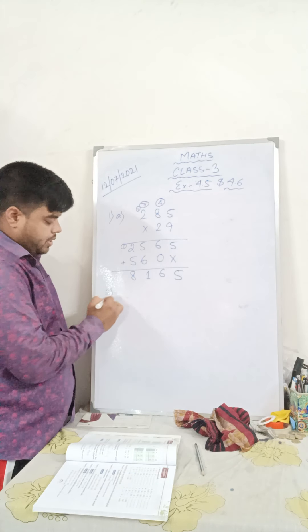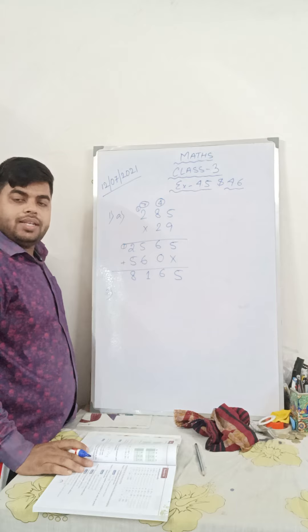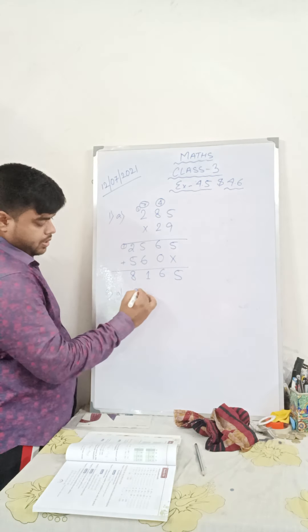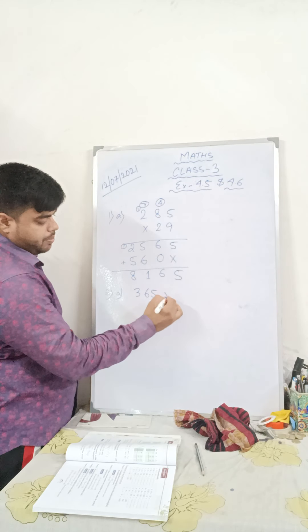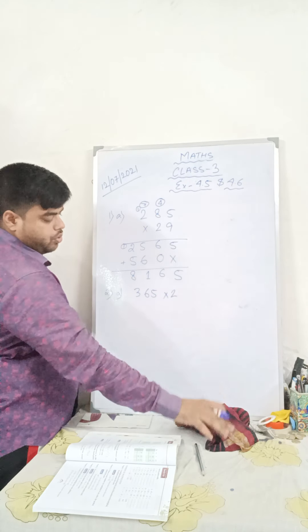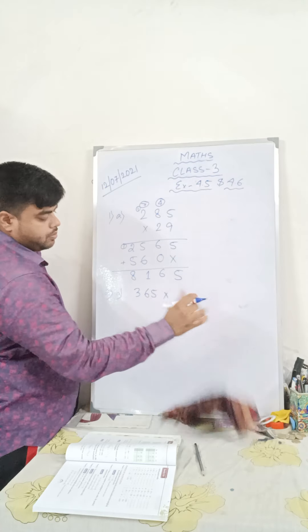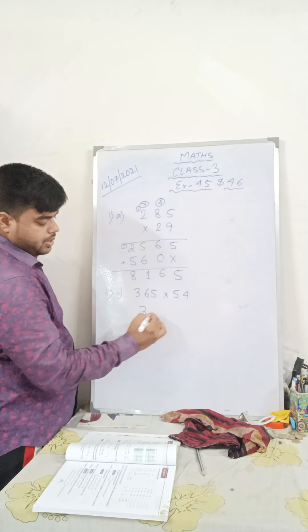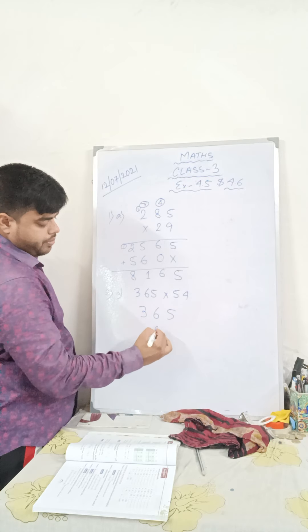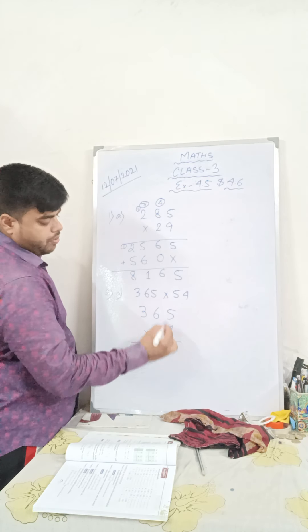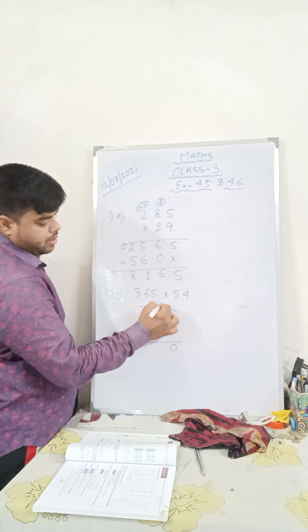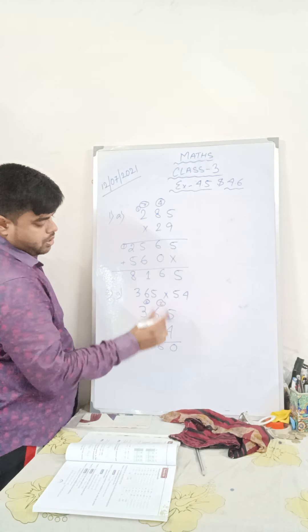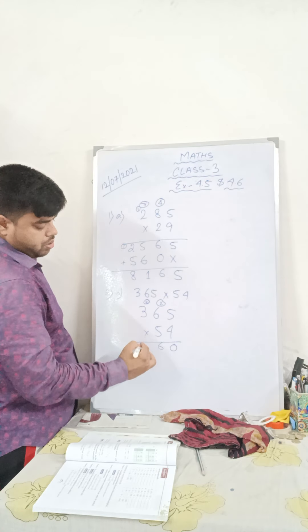Question number 2, they have not arranged the numbers, but you have to arrange them and then multiply. Write the question first: 365 multiplied by 54. Arrange them — 365 and 54. Now multiply: 4 fives are 20, 2 in hand. 4 sixes are 24 plus 2 is 26, 2 in hand. 4 threes are 12 plus 2 is 14.